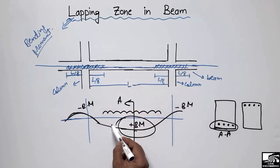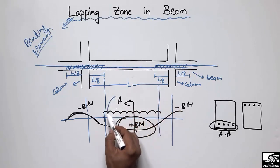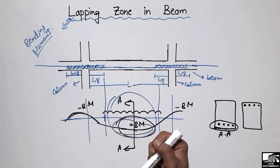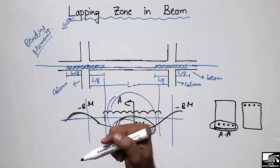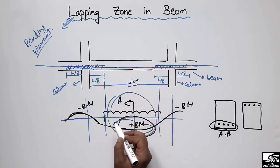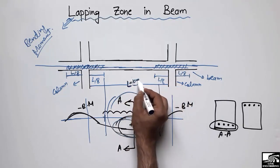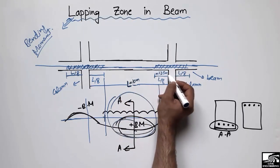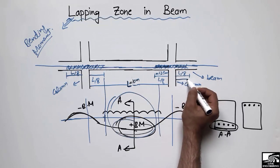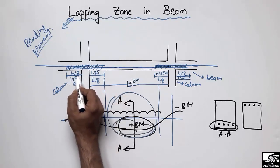After the L/8 zone there is maximum bending moment, where we are not allowed to overlap the steel bar because it will decrease the strength of the beam section. For example, if we have a 10-meter beam, then L/8 comes out to be 1.25 meters. So up to 1.25 meters from the left support and 1.25 meters from the right support, we can overlap our steel bars.